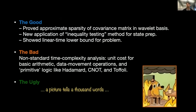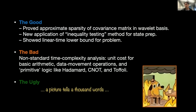Let's analyze what's gone well and what hasn't in this quantum field theory algorithm paper. When I talk about the good, the bad, and the ugly, I mean good reasons for the paper to be long and take a long time to write, bad reasons, and then the ugly. The good reasons are that there's actual novelty: we show the covariance matrix is approximately sparse, which requires novel mathematics. There's also a new application of what I call the 'inequality testing method for state preparation' — a paper I did with Dominic Berry. And we show a linear-time lower bound, meaning our quasi-linear algorithm is approximately optimal.